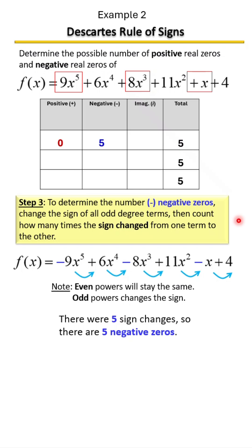Now, the first two columns are the only two columns that you add. Remember, the third column is your adjustment column — you place a number there if it does not add up to what it should be for your total. So zero plus five does add up to five, our total. So there are no imaginary zeros; we put a zero there.